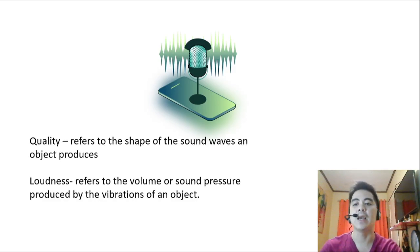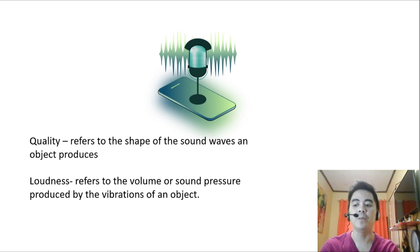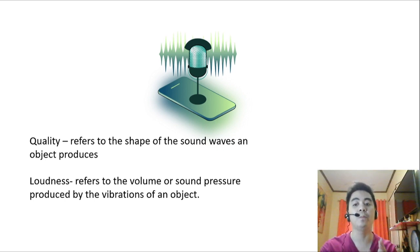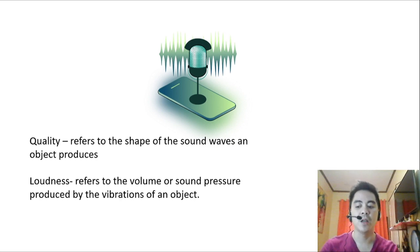Next, we have the quality and other properties of sound. Quality refers to the shape of the sound waves an object produces. The smoother the shape of the waves, the better the quality of the sound and the more pleasing to hear. If the shape of the sound waves is ragged, the sound produced is unpleasant. Loudness refers to the volume and sound pressure produced by the vibration of an object. If the sound produces high pressure, the sound becomes louder; if the pressure is low, it has a low volume.